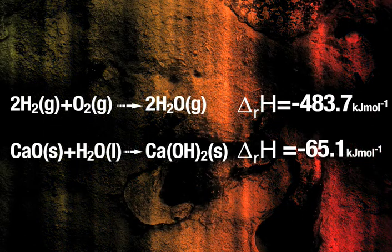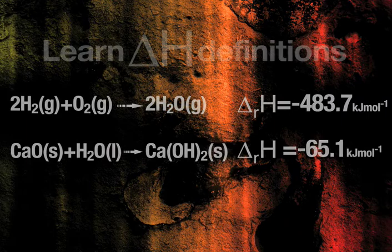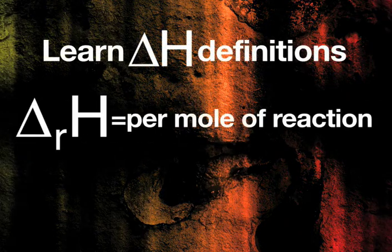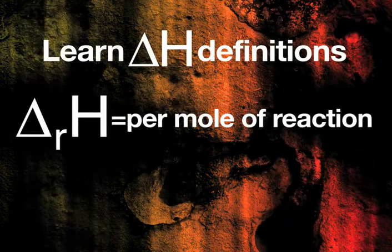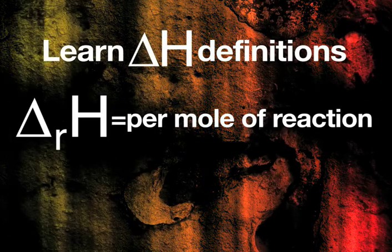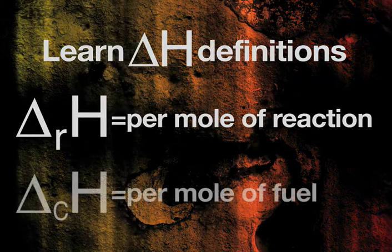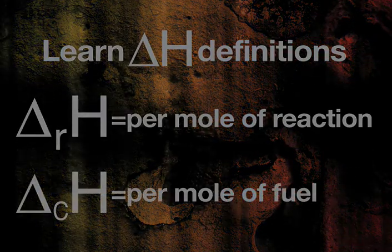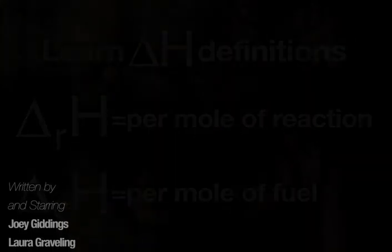It is important that the definitions of delta H values are learned. For example, delta-R-H refers to per mole of reaction as given by the balanced equation, whereas delta-C-H refers to per mole of fuel.